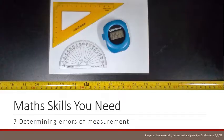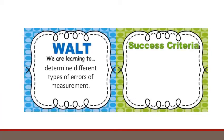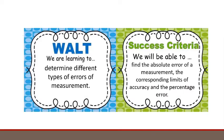So here we are, we're determining errors of measurement. And we're learning to determine that there are different types of errors of measurement, and we'll be able to find the absolute error of measurement, the corresponding limits of accuracy, and the percentage error.